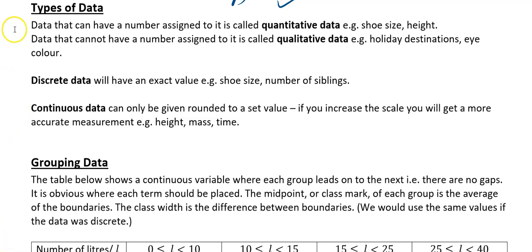First thing we're going to do is look at our types of data. We have two main types of data. We have got what's called quantitative data. Quantitative data is basically numerical data, so it could be a number that can be assigned to it — things like shoe size, height, speed, time, anything like that.